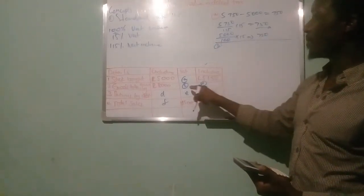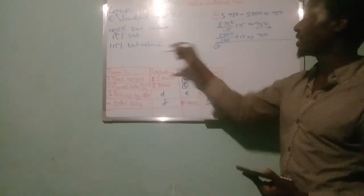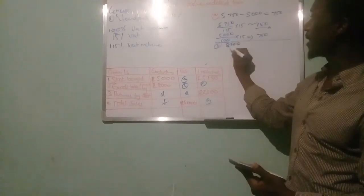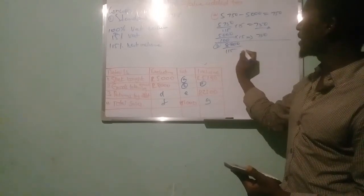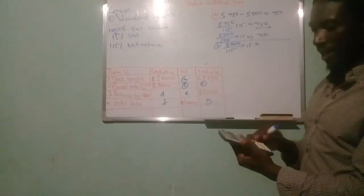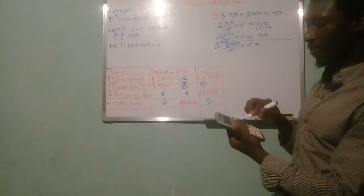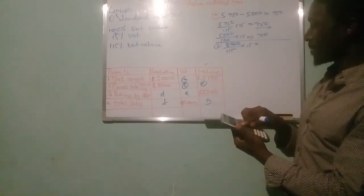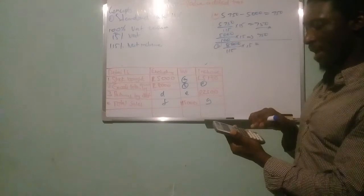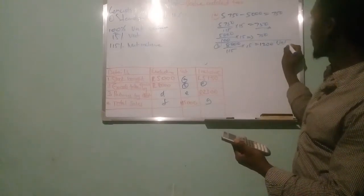For example B, you are given only the VAT exclusive amount. Since it is exclusive, it is over 100. We say 8,000 divided by 100, multiplied by 15, and you should get 1,200. That is your VAT amount for B. For example C, using the very same amount of 8,000 which is VAT exclusive — that is over 100 — multiply by 115 to find the VAT inclusive amount. So 8,000 divided by 100, multiplied by 115, gives you 9,200. That is the VAT inclusive amount for C.